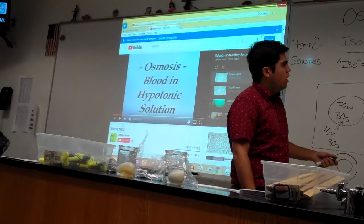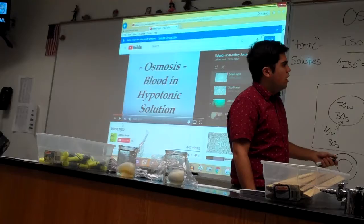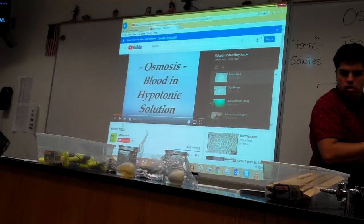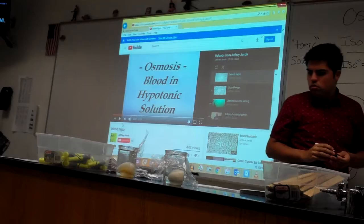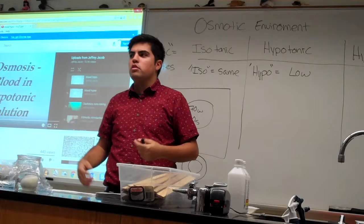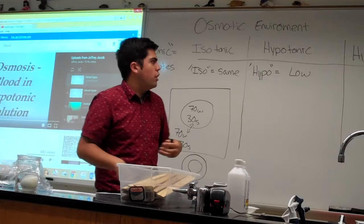So when you guys saw it up there there's kind of like round little shapes all kind of clustered about so that was your isotonic. Before we show you the hypotonic one over here hypo, hypo equals low.